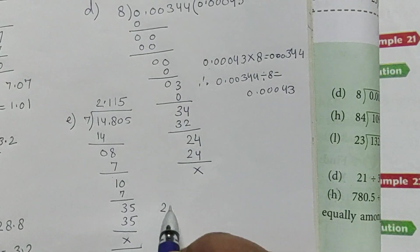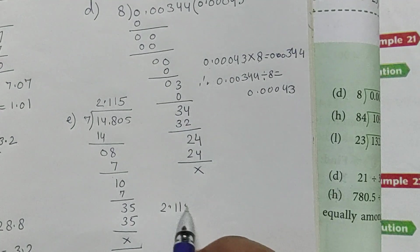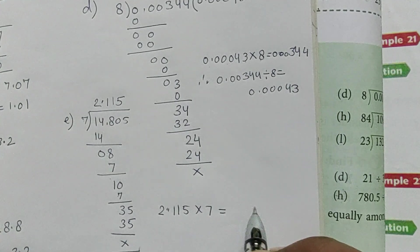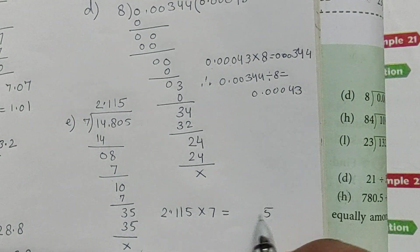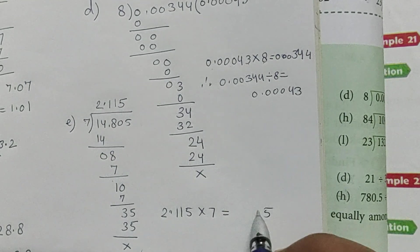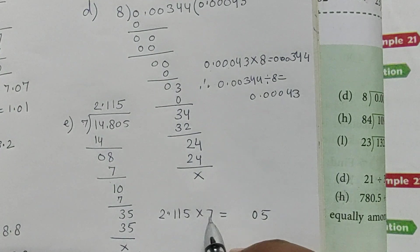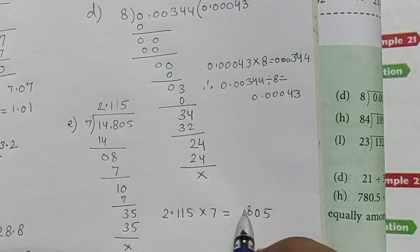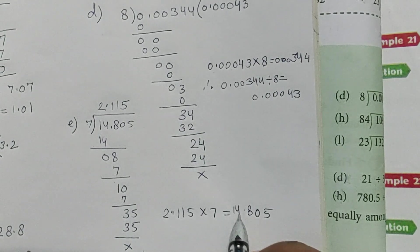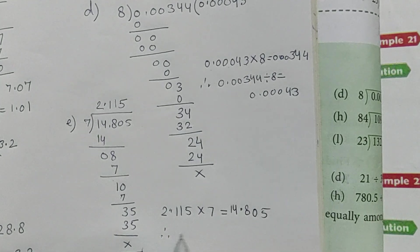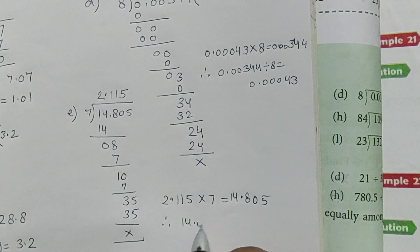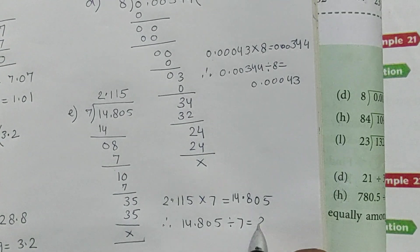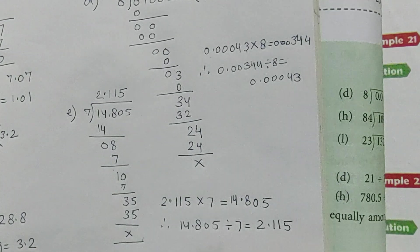So 2.115 multiplied by 7. 7 into 5 is 35, carry 3. 7 into 1 is 7 plus 3 is 10, carry 1. 7 into 1 is 7 plus 1 is 8. 7 into 2 is 14. Therefore, 14.805 divided by 7 is equal to 2.115.